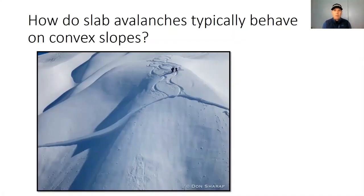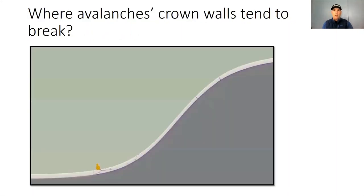Understanding where avalanches are typically triggered and where the parameters are can help us manage the risk on these slopes. The balance between the forces pulling the slab down the slope, the slab-bed surface friction, and the slab tensile strength dictate where avalanche crown walls are formed. This balance changes with slope angle.